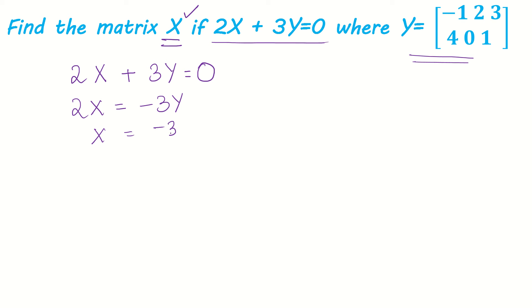We have to find matrix X, right? So 2X is minus 3Y, then X will be minus 3 by 2 Y. We are given with Y, so minus 3 by 2 into—in place of Y I'm going to substitute this whole matrix. What is Y? It is minus 1, 2, 3, 4, 0, 1.